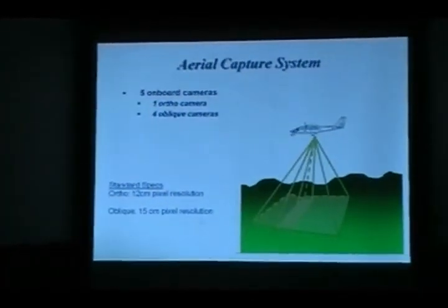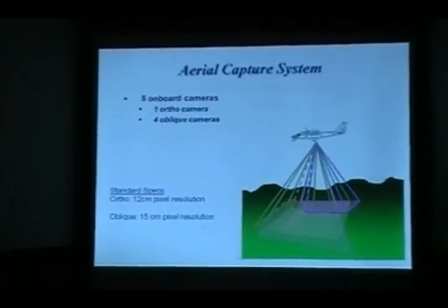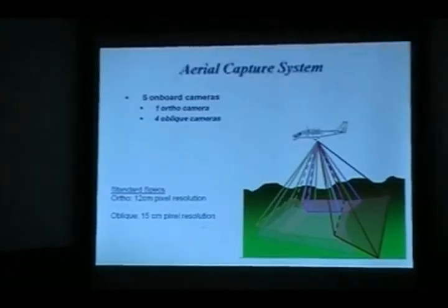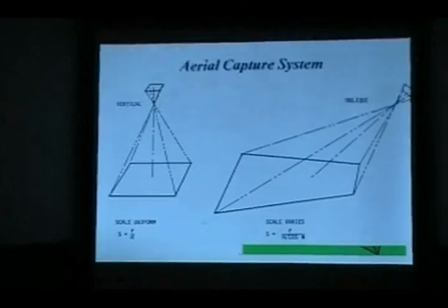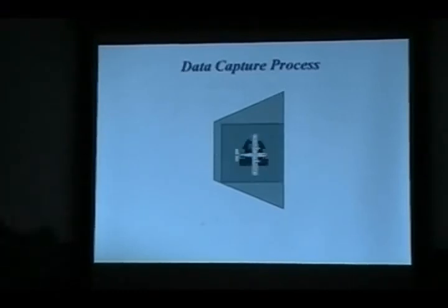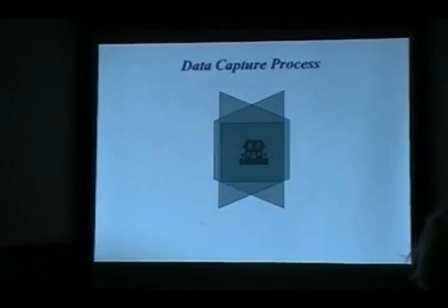This is the aerial capture system - this is how it works. It simultaneously captures from five digital cameras, one orthogonal and four oblique. As those angles are constant, processing allows all features in the oblique and orthos to be located and measured. So if your location is anywhere within the flight plan, this is how you will be captured.